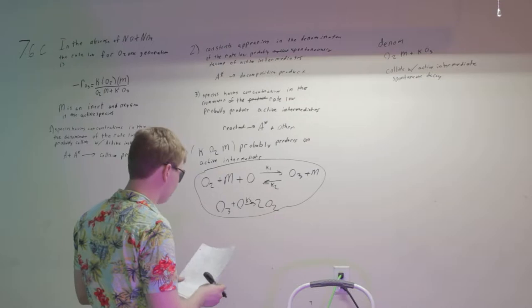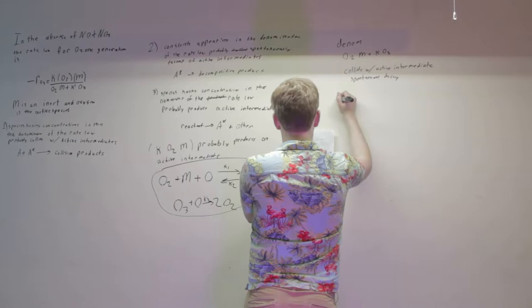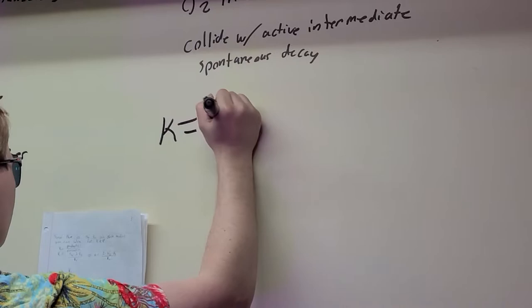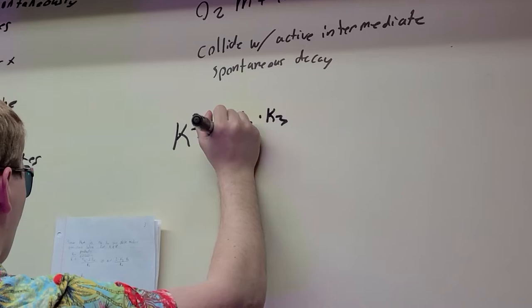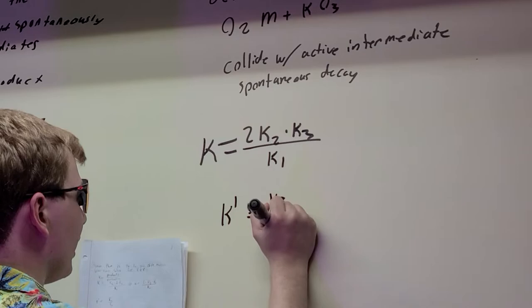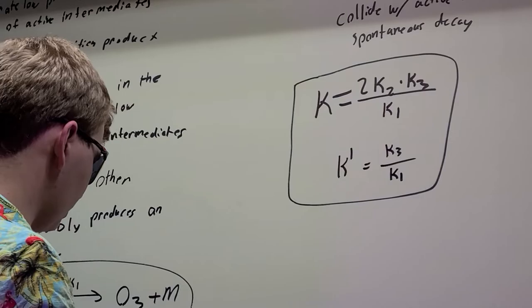Then if we want to try and substitute into this, we can find out what K prime and K is. So we know this will then create 2 K2 times K3 over K1. And for K prime, we know that K3 over K1. So now we have the mechanisms.